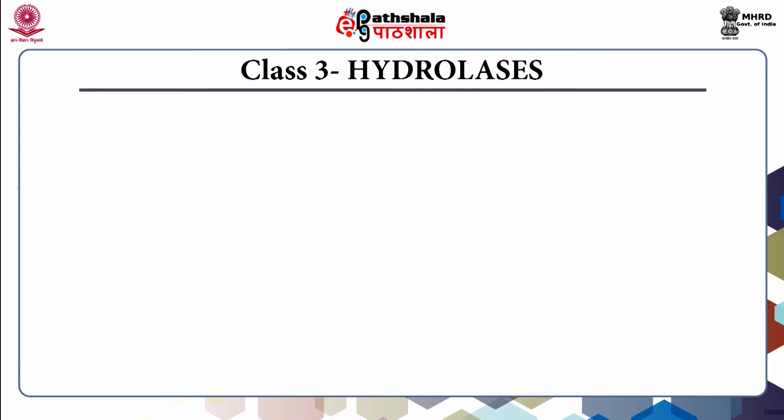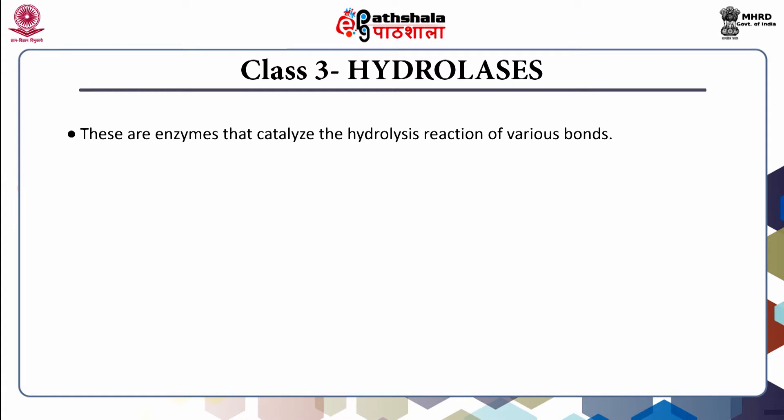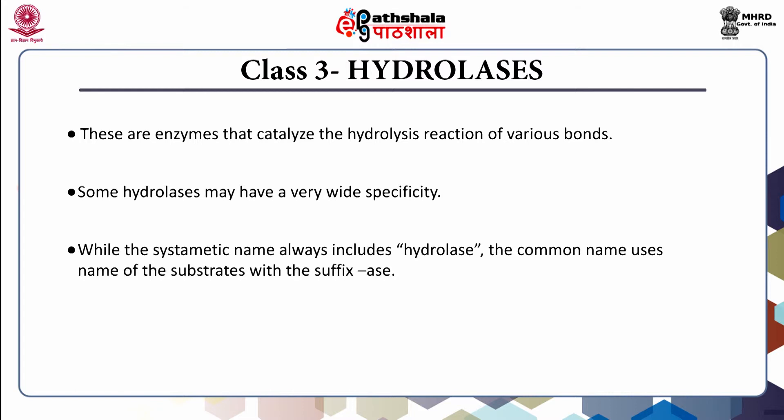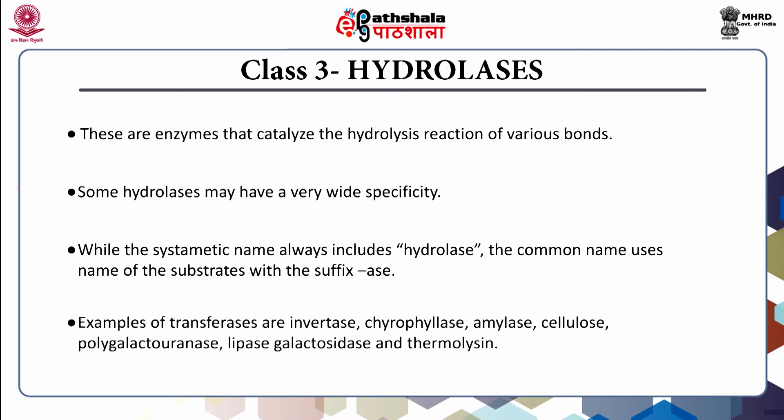The third class of enzymes are hydrolases. These enzymes catalyze the hydrolysis of various bonds. Some hydrolases may have very wide specificity. While the systematic name always includes 'hydrolase,' the common name uses the name of the substrate with the suffix '-ase.' Examples include invertase, amylase, cellulase, polygalacturonase, lipase, galactosidase, and thermolysin.